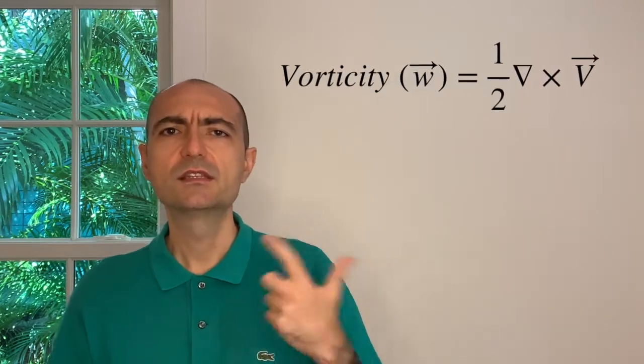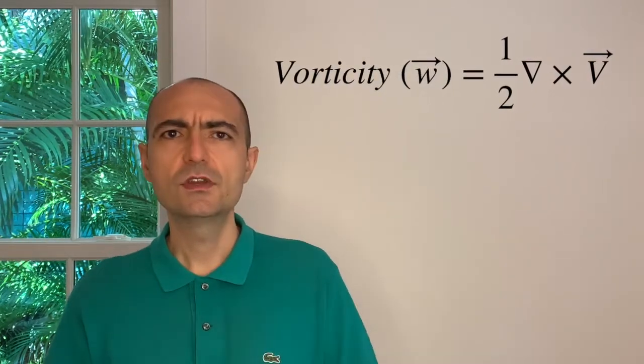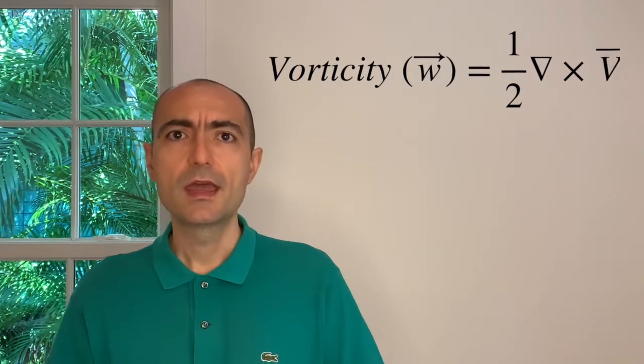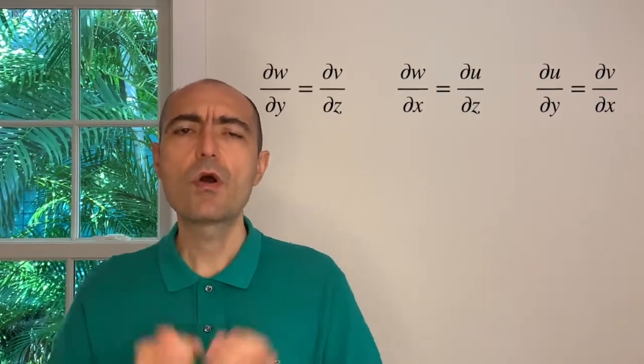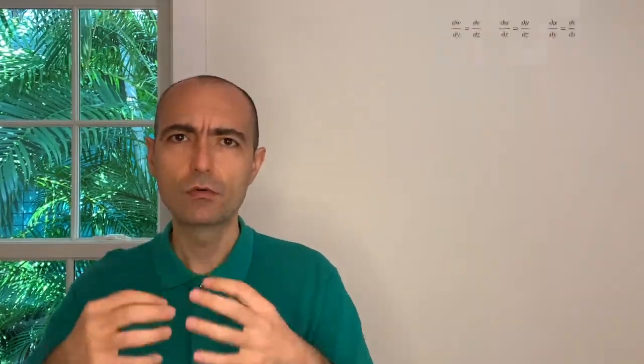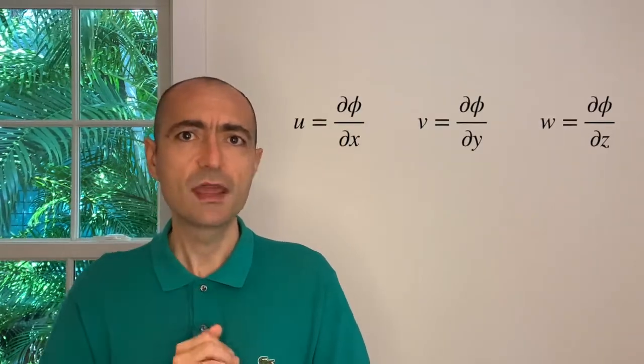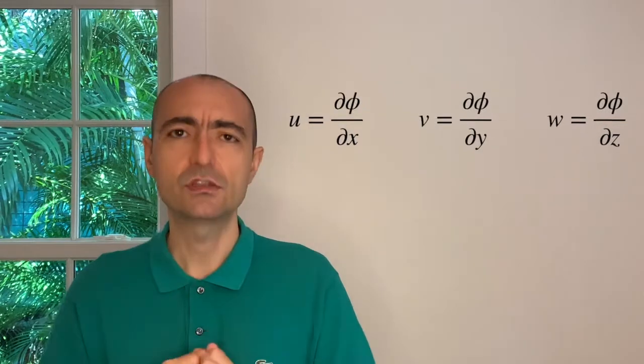And then I started with a concept called vorticity and velocity potential. I gave you the definition of vorticity. It's up there. And I showed you that if vorticity is equal to zero, then my flow is called potential flow or irrotational flow. And what I did was, if my flow is irrotational, I defined another function. And I called this time around velocity potential.